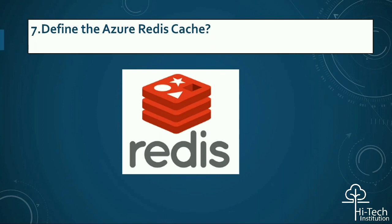The next question is: define Azure Cache for Redis. Azure Cache for Redis is an in-memory cache that is fully managed and enables high-performance and scalable architectures. Use it to create cloud or hybrid deployments that handle millions of requests per second at sub-millisecond latency, with the configuration, security, and availability benefits of a managed service.